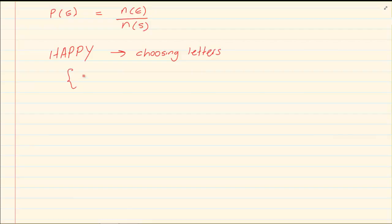So your sample space is basically H, A, P, P, Y. That's what we have. But we don't draw a sample space for this because when we are looking at the questions we can immediately look at what they are saying. Now what is the probability that I will choose a letter H?